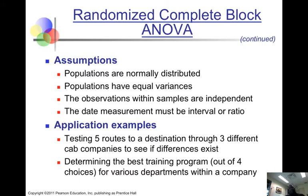The assumptions are quite similar to the assumptions for one-way ANOVA. We assume that the populations are normal, the variances are equal, the observations within each sample are independent of each other, and that we are working with ratio data or interval data.